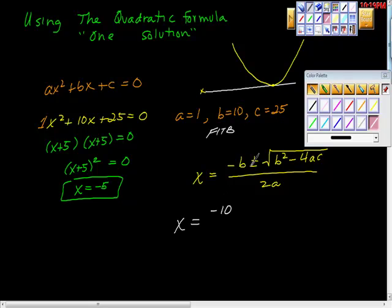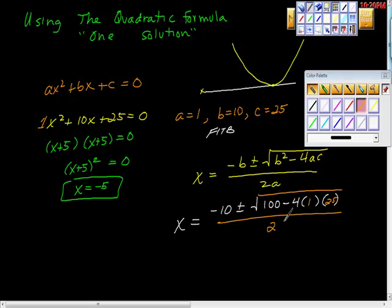Then it says plus or minus, so plus or minus, square root b is 10, 10 squared is 100. Minus 4ac, we went back, we already did this, see how this list building really helped us? a is 1, c is 25. All over 2, 2a. 2a, but a is 1, so 2 times 1 is just 2.